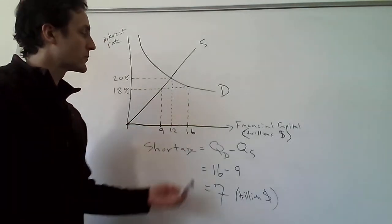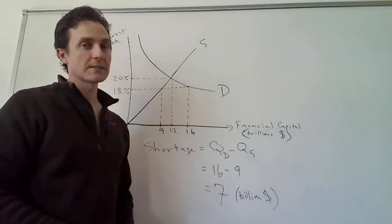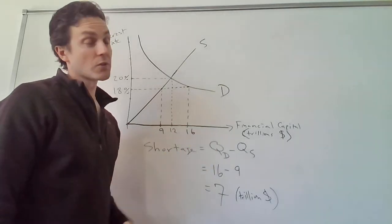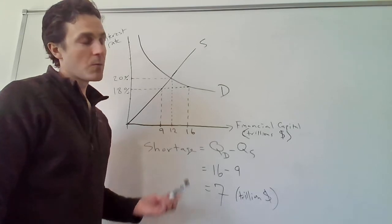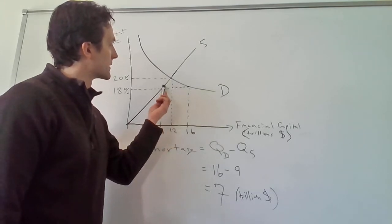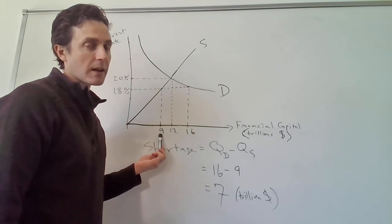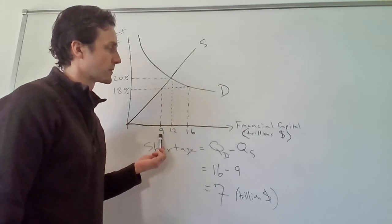The size of the shortage is equal to the quantity demanded minus the quantity supplied. We can see that the quantity demanded is $16 trillion worth of financial capital, while the quantity supplied, looking at the supply curve at 18%, is going to be $9 trillion worth of financial capital.